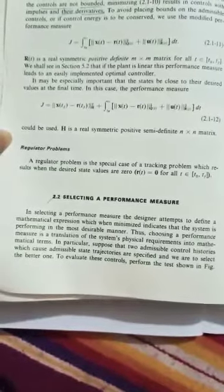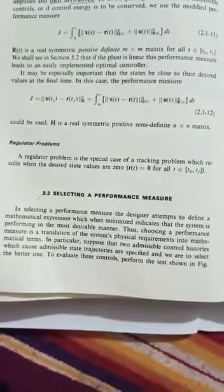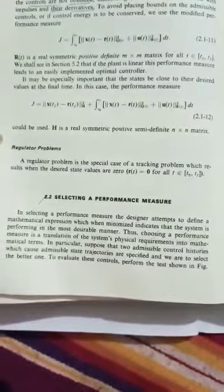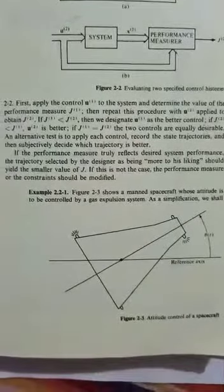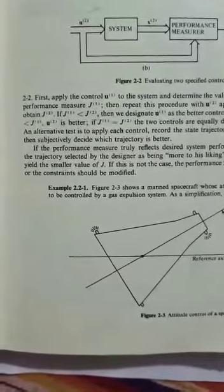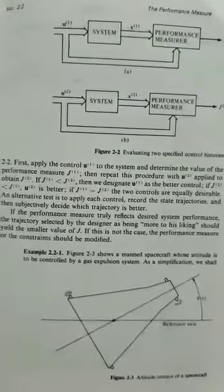The next topic is selecting a performance measure. To minimize the performance measure, we have to translate the physical requirements into mathematical terms. Here we are considering two admissible control histories in this diagram. These admissible state trajectories are specified, and we are to select the better one out of these two.